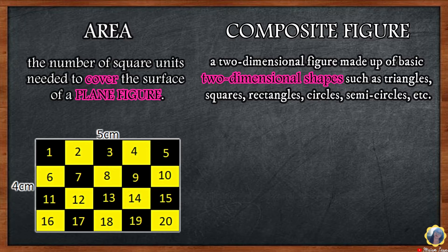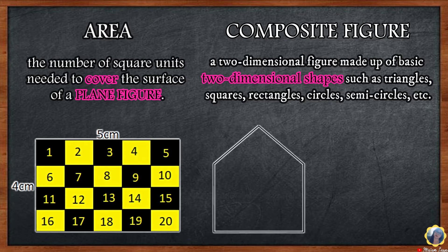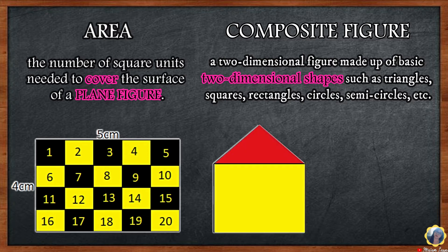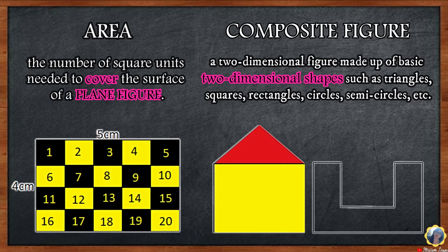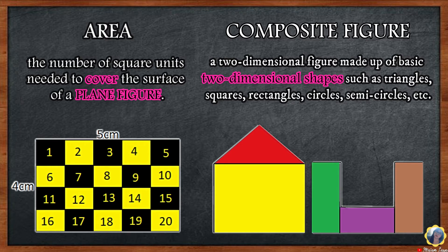A composite figure is a two-dimensional figure made up of basic two-dimensional shapes such as triangles, squares, rectangles, circles, semicircles, etc. In this figure, you can see that there is a triangle and a rectangle. In this other figure, there are three rectangles. These are examples of a composite figure.